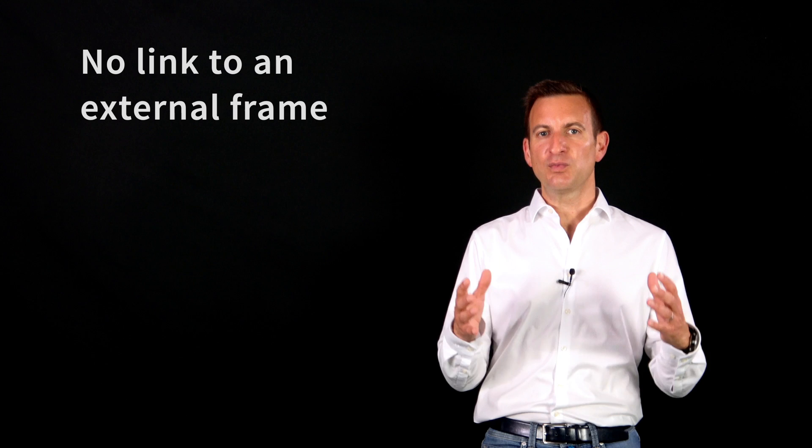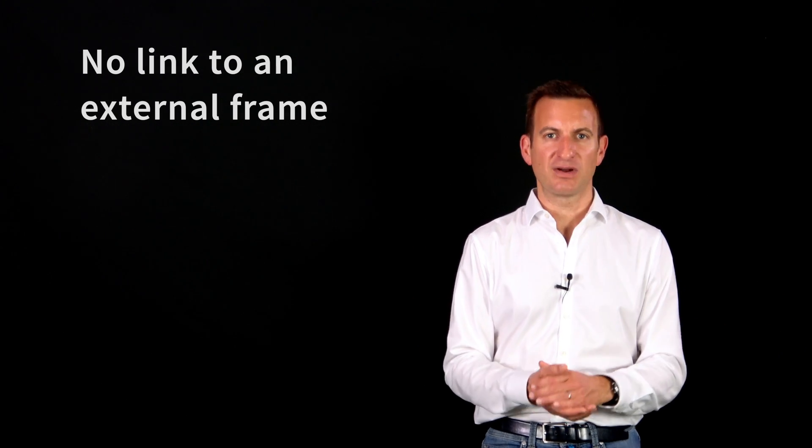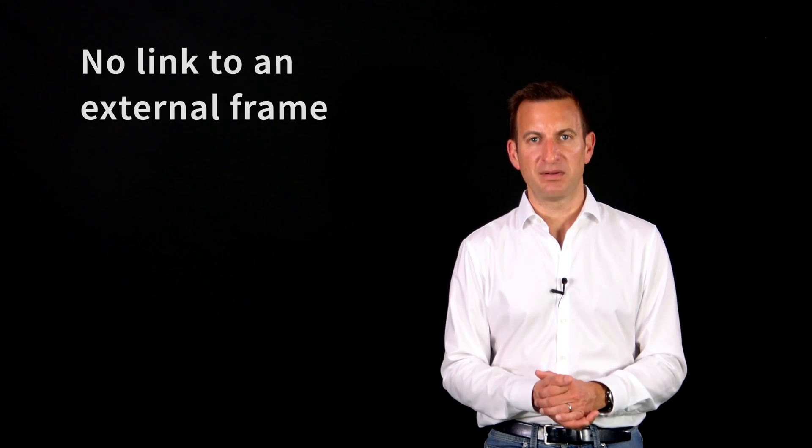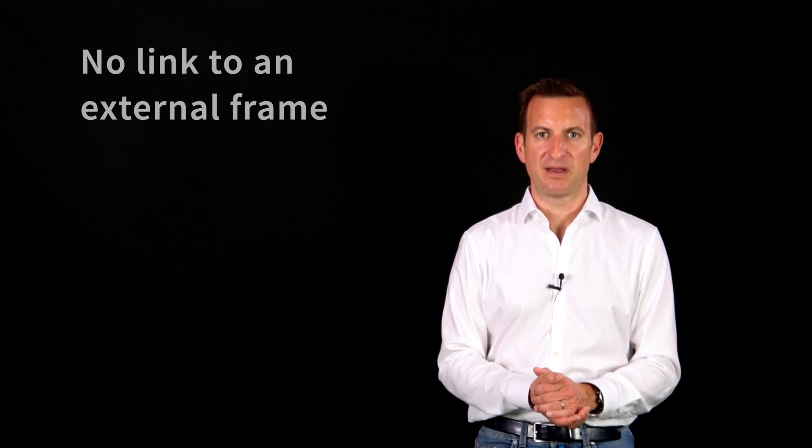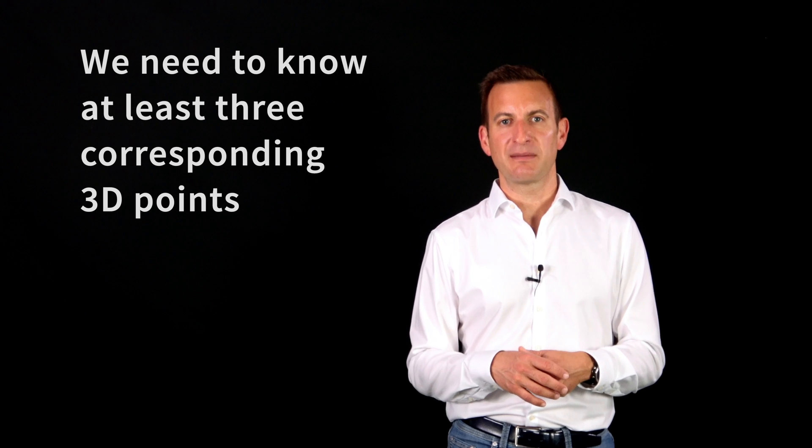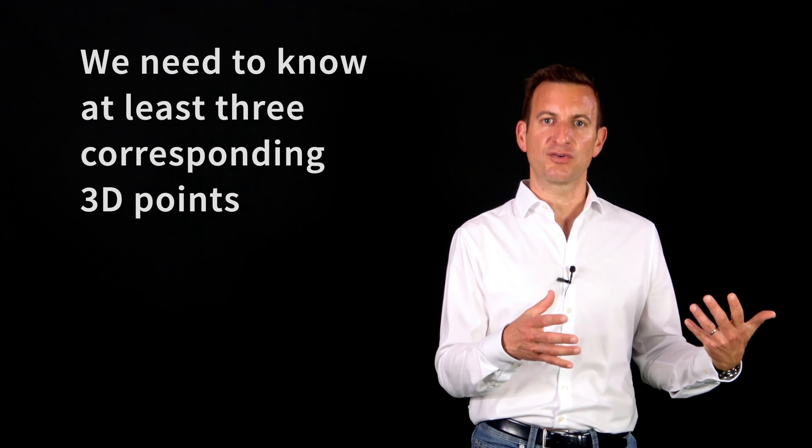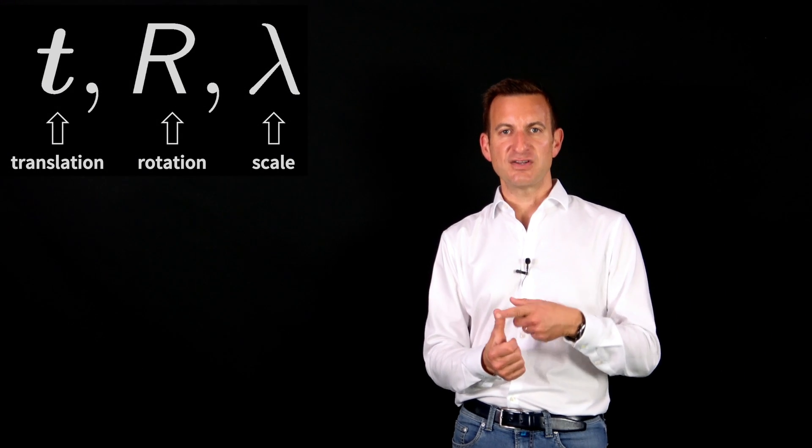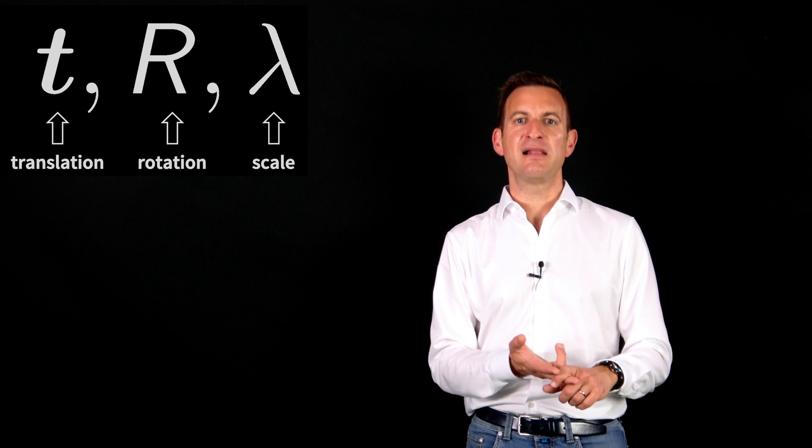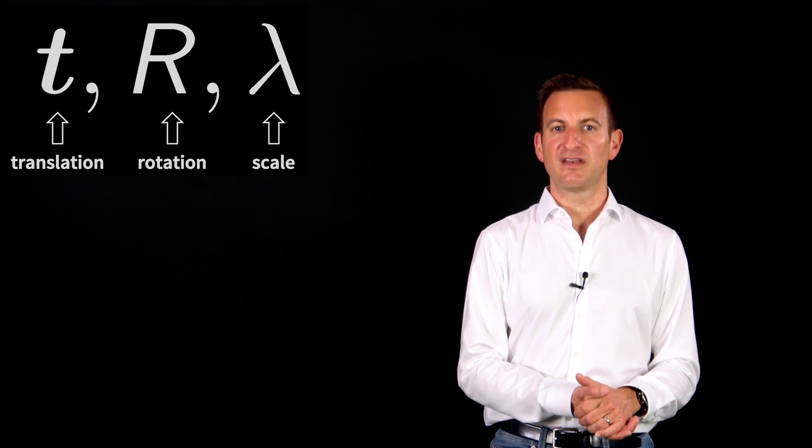And you do not know where those points are in an external reference frame, in the GPS coordinate frame, for example, or in the frame of the BIM model of your building, for example. And if you want to relate them with each other, you need to have some correspondences, and once you have those correspondences, at least three, better more, you can actually compute the translation parameters, rotation parameters, and scale parameters so that these point sets get aligned.